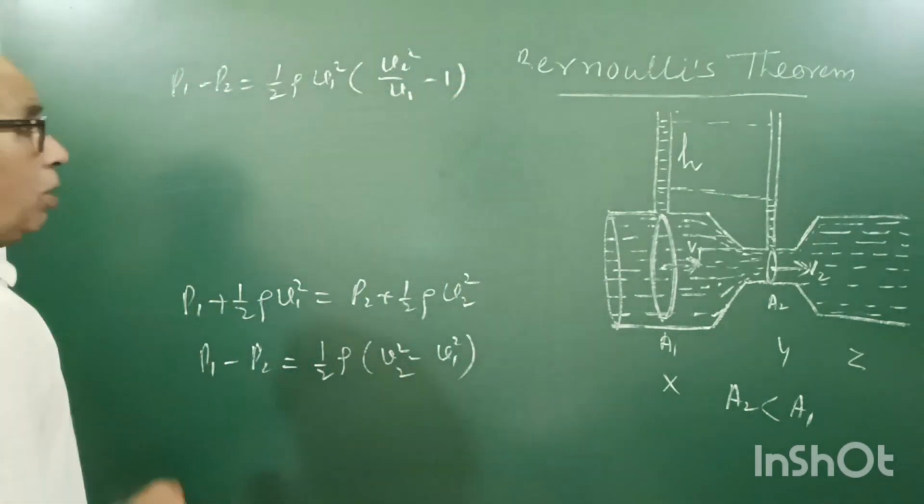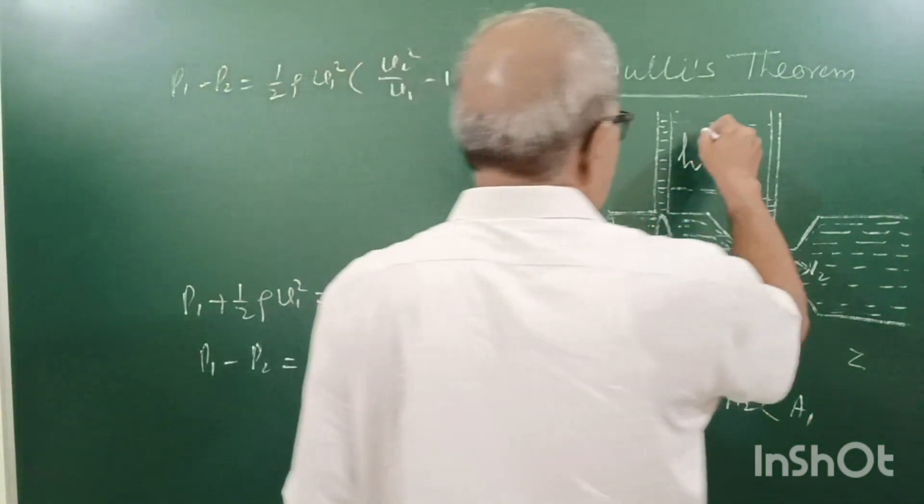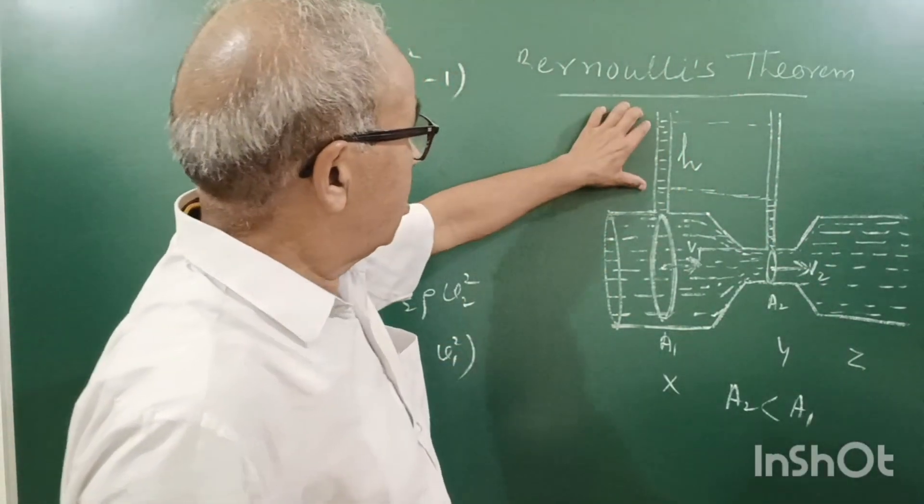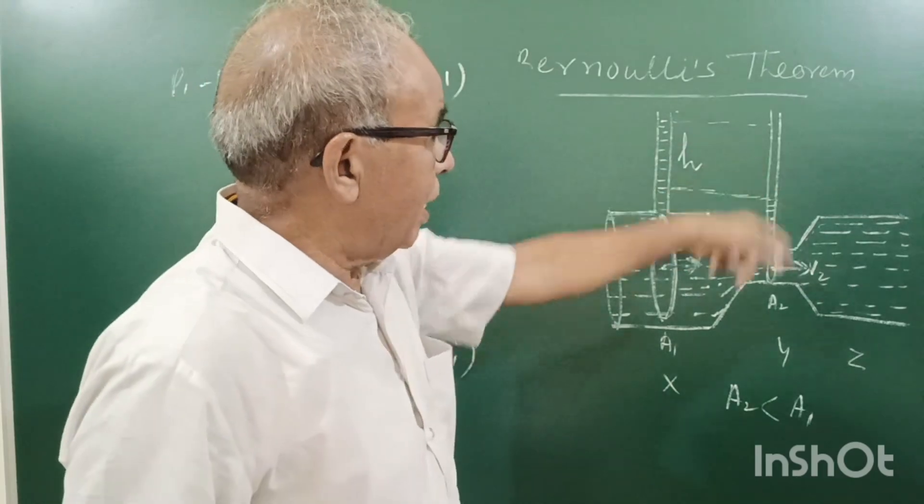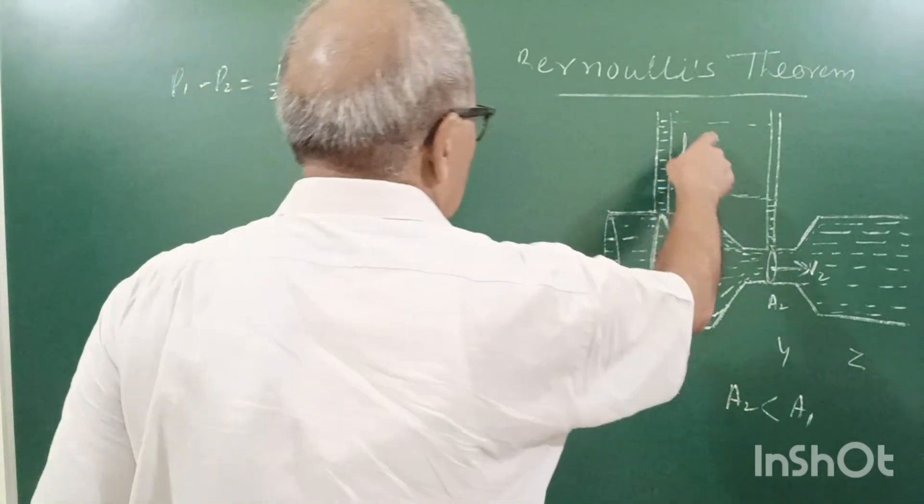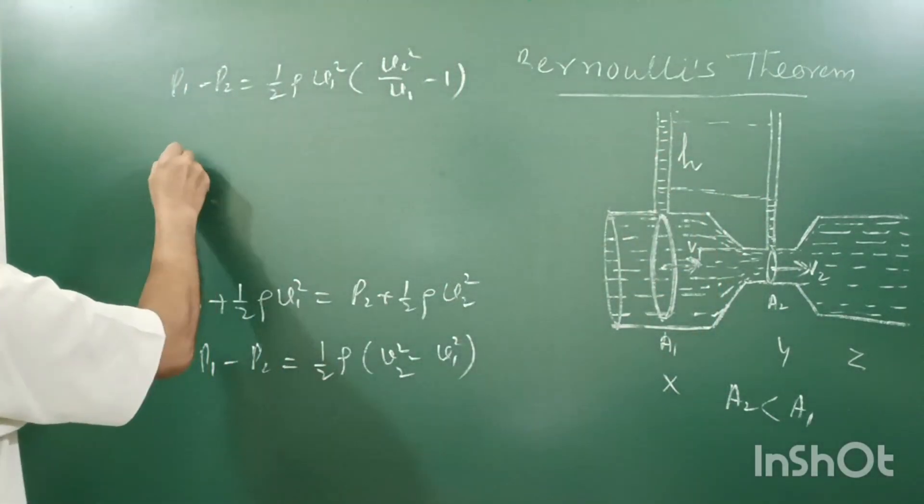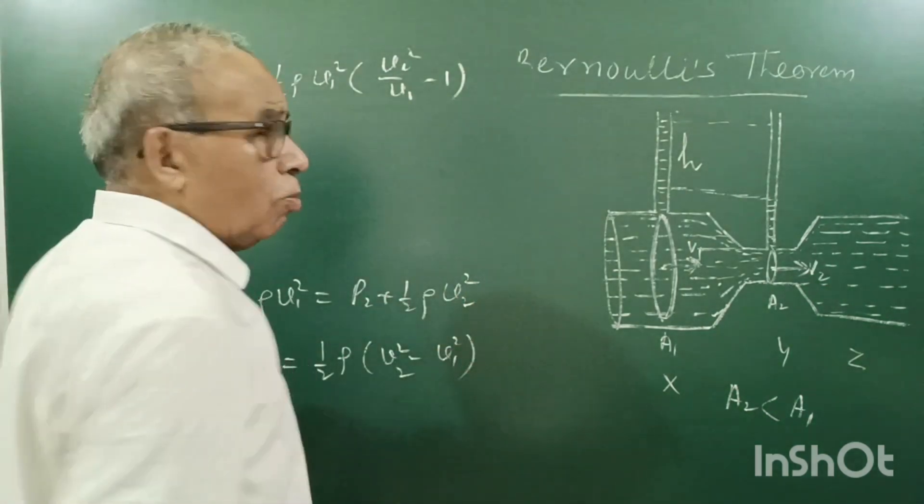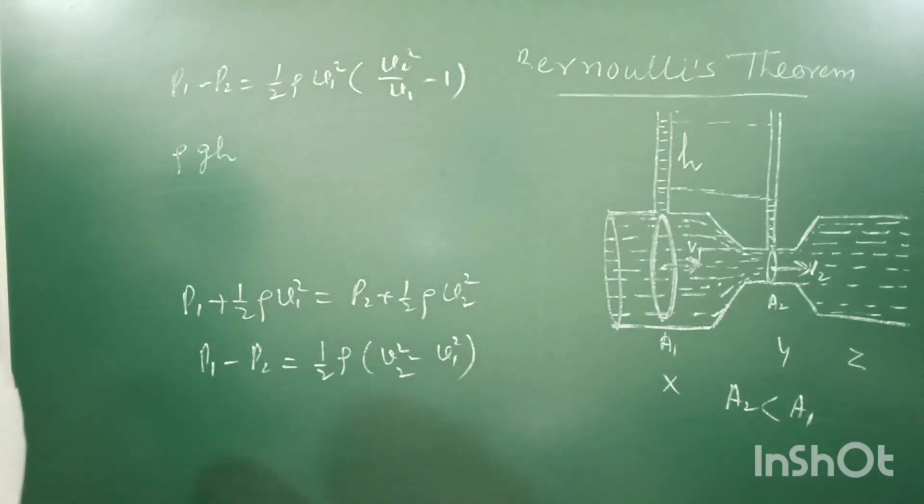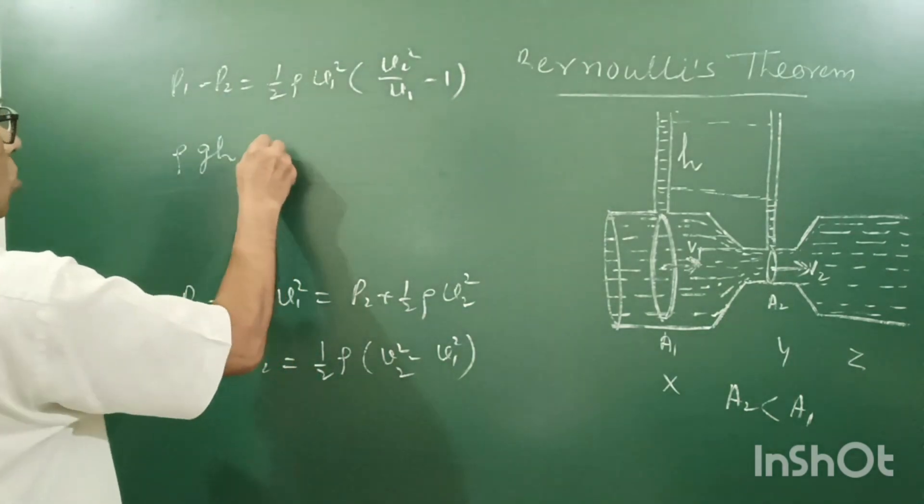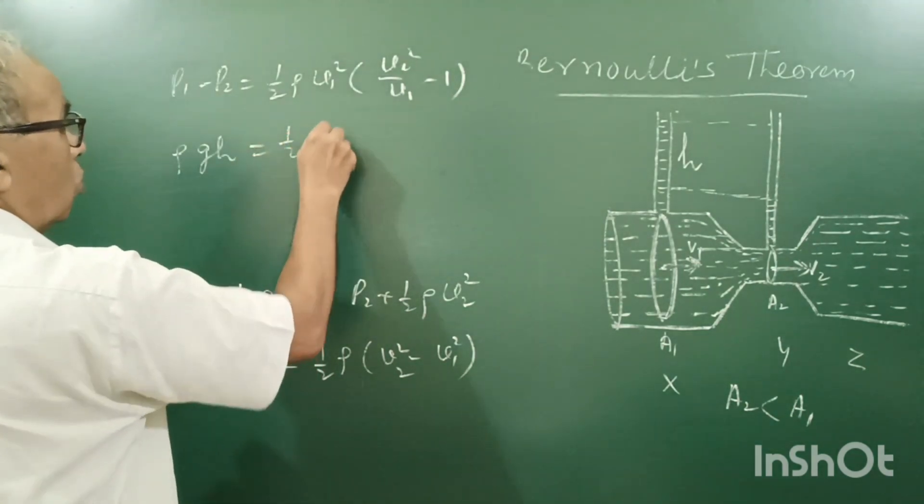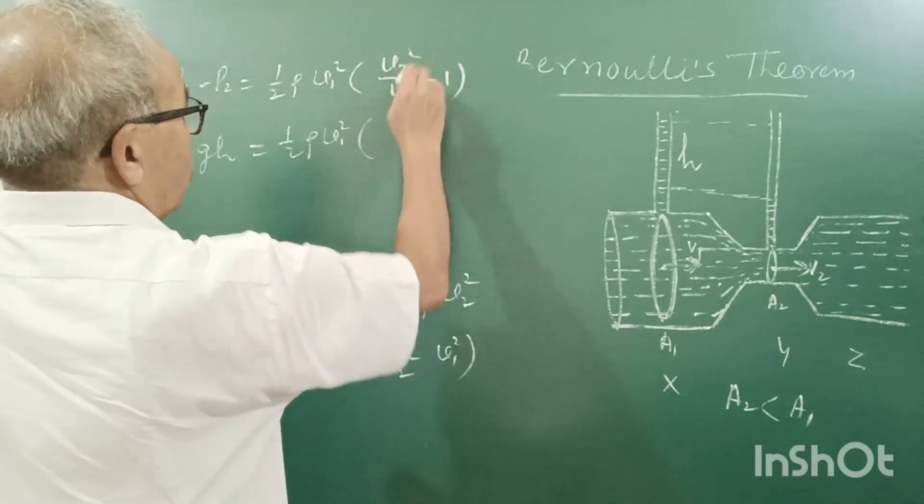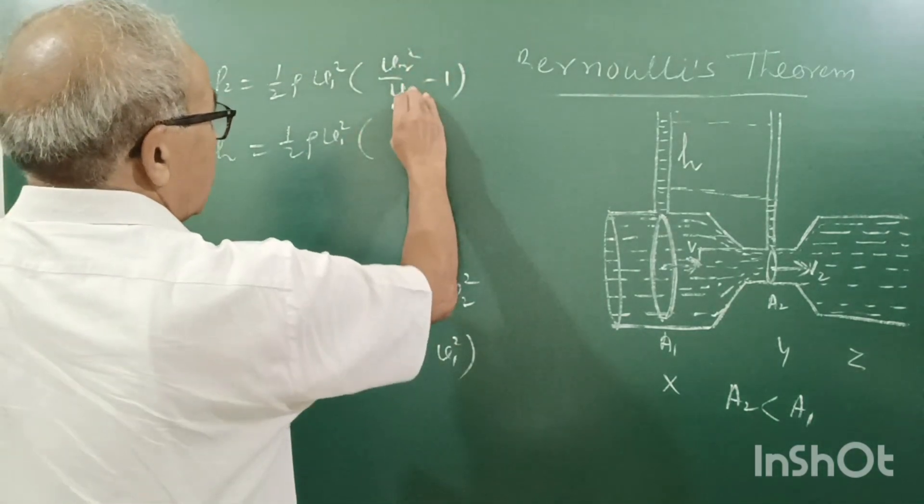V1, but P1 minus P2 is the pressure difference, which is measured by the manometer, which is equal to rho G h. Rho G h is equal to half rho V1 square, V2 upon V1 square.